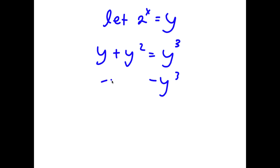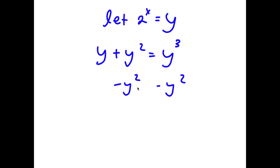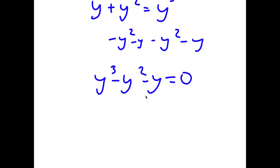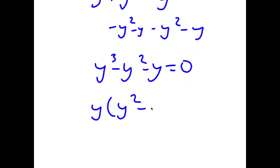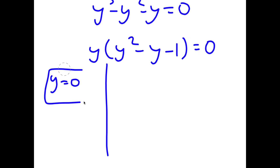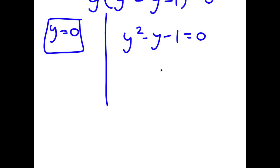Now instead of subtracting y cubed, I'm going to subtract y squared and y from both sides, so I have y cubed minus y squared minus y is equal to 0. Factoring out y, I get y times y squared minus y minus 1 is equal to 0. This gives me two equations: y equals 0, which is already a solution, and y squared minus y minus 1 equals 0. To solve the quadratic, I would use the quadratic formula, and solving it gives y equals 1 plus or minus the square root of 5, all over 2.